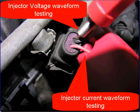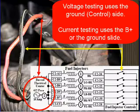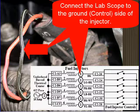We're going to look at the injector's voltage waveform and the injector's current waveform. Voltage testing uses the ground side — the control side of the injector. Current testing, you can use either the B+ or the ground side to test. Connect the lab scope to the ground, the control side of the injector.